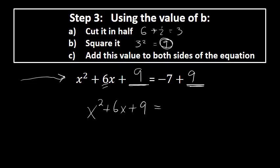Negative 7 plus 9 gives 2, so the equation becomes x squared plus 6x plus 9 equals 2. This has the same two solutions as the original problem, just written in a form that allows us to continue solving.